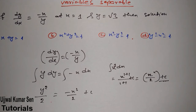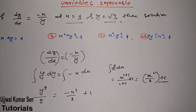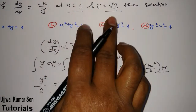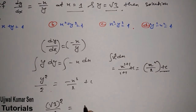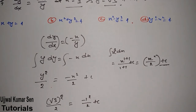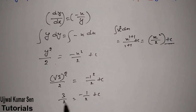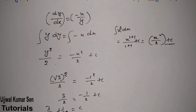The question is not over yet because they have given us the initial condition x = 1, y = -√3, to find the value of c. Putting these values in: (√3)²/2 = -(1)²/2 + c, so 3/2 = -1/2 + c. Sending -1/2 to the other side: 3/2 + 1/2 = c.